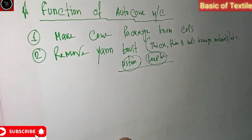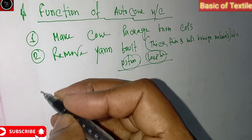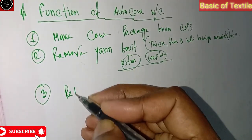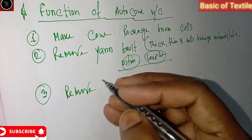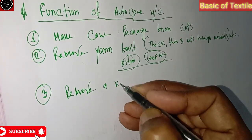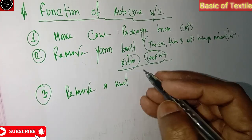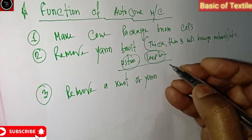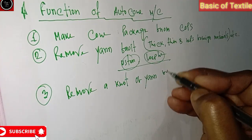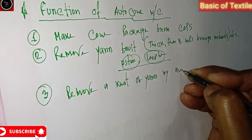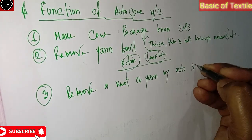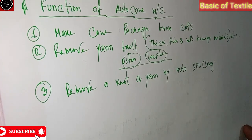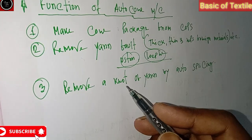Number three: to remove knots from yarn by auto splicing.